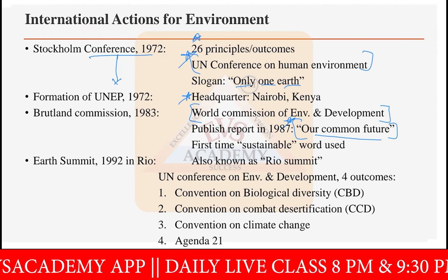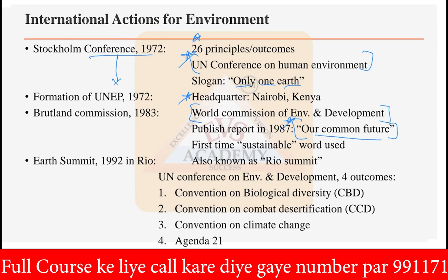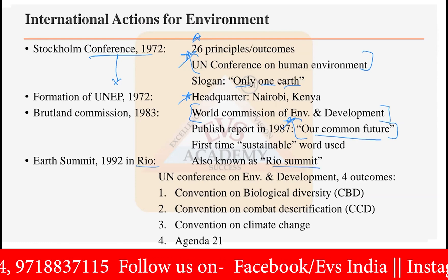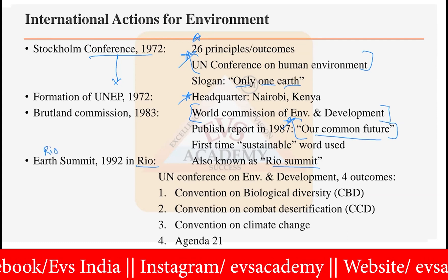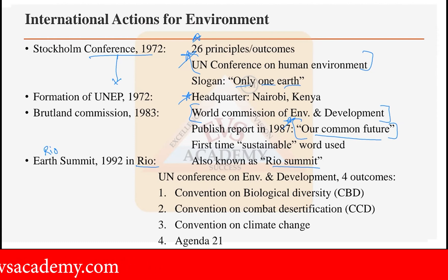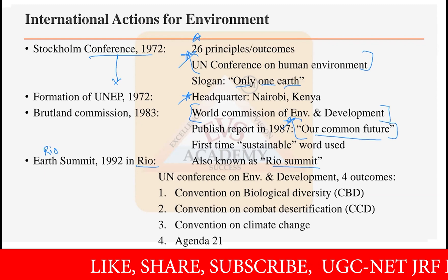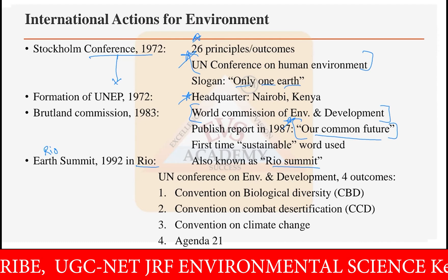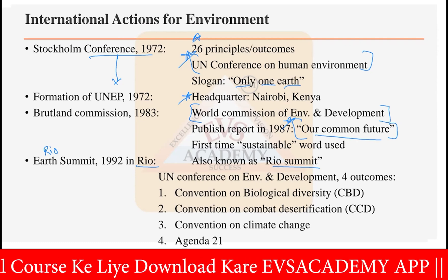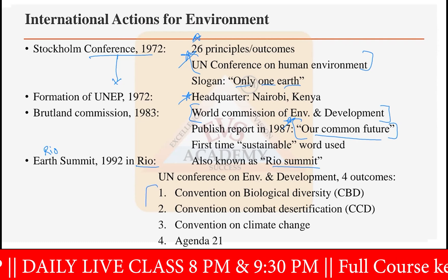After 1987, another major development took place under UNEP: a summit called the Earth Summit, held in 1992 in Rio, Brazil. This is also called the Rio Summit. The United Nations Conference on Environment and Development took place there, and four outcomes were decided: first, the Convention on Biological Diversity (CBD); second, the Convention to Combat Desertification (CCD); third, the Convention on Climate Change; and fourth, Agenda 21.